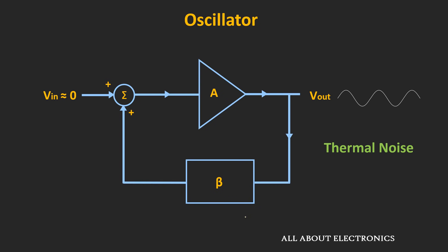Out of all the frequency components, only for one particular frequency will the phase shift introduced by the amplifier and feedback circuit equal zero, while all other frequencies will have a different phase. So only one particular frequency will get added with the input noise. In this oscillator circuit, initially the loop gain Aβ is set slightly more than 1, and because of that, the noise signal of that particular frequency will build up over time.